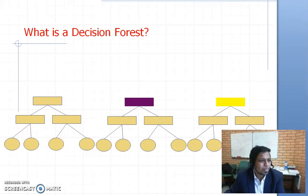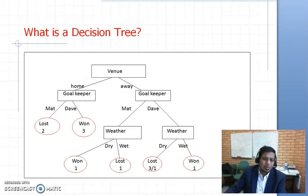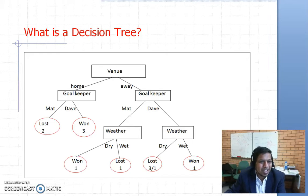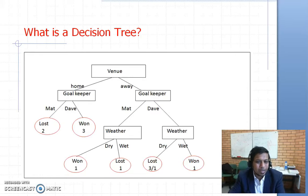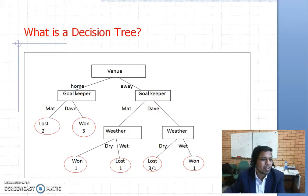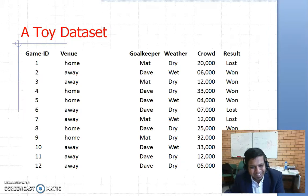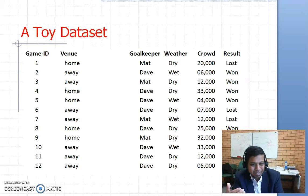The next obvious question is: what is a decision tree? A decision tree is something like this — it's a tree-like structure that you can actually create or build from a given data set.